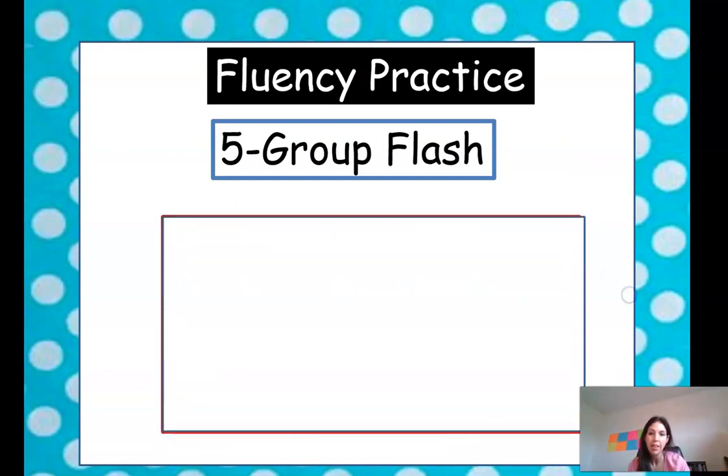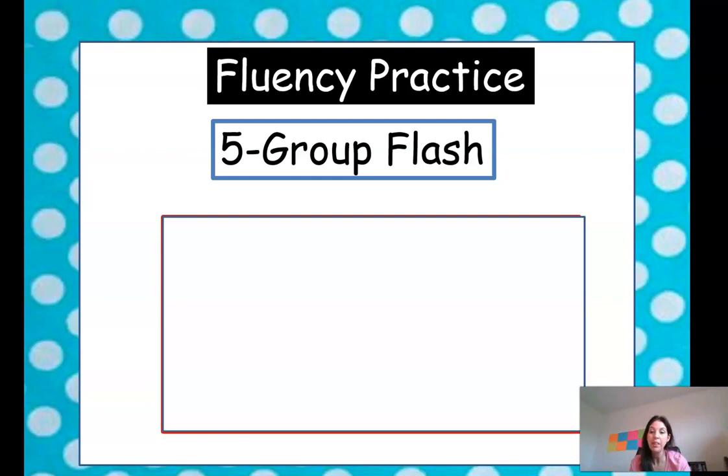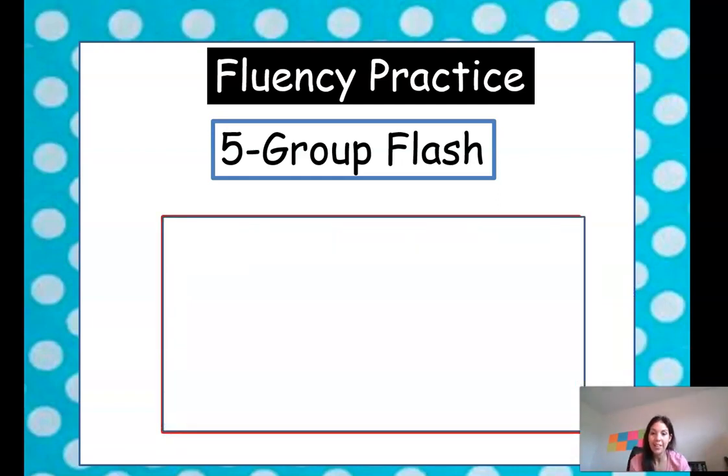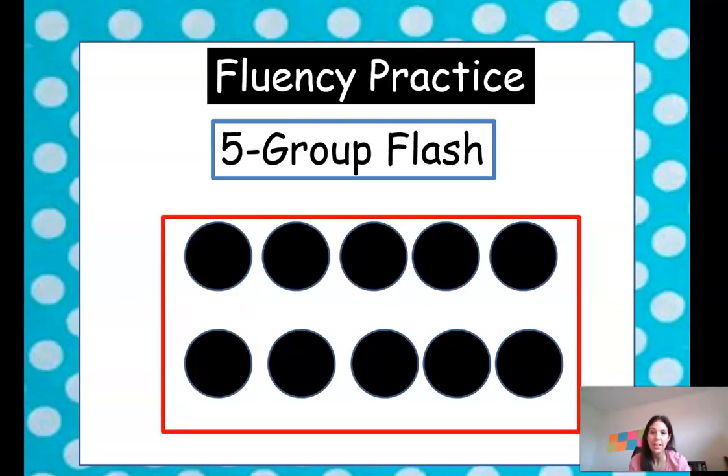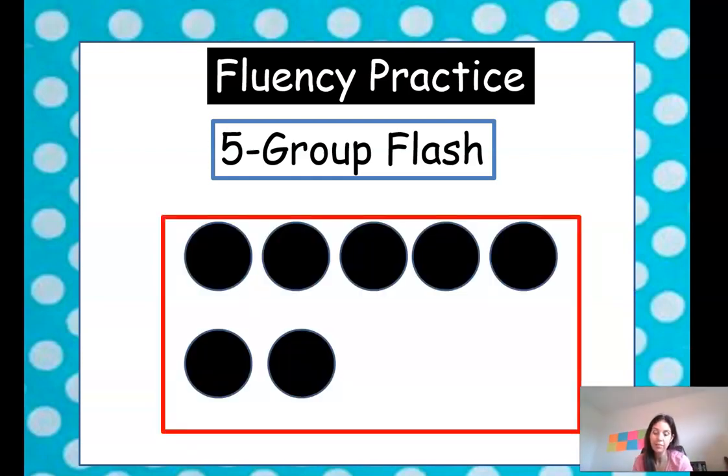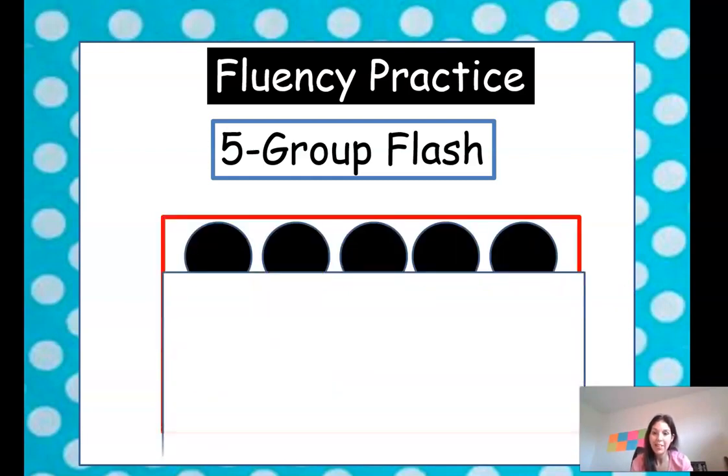Here we go. How many? 5. What's the partner? 5. Very good. How many? 3. What's the partner? 7. Good. How many? 8. Very good. What's the partner? 2. How many? 10. What's the partner? 10 plus 0 equals 10. How many? 7. What's the partner? 3. Very good.